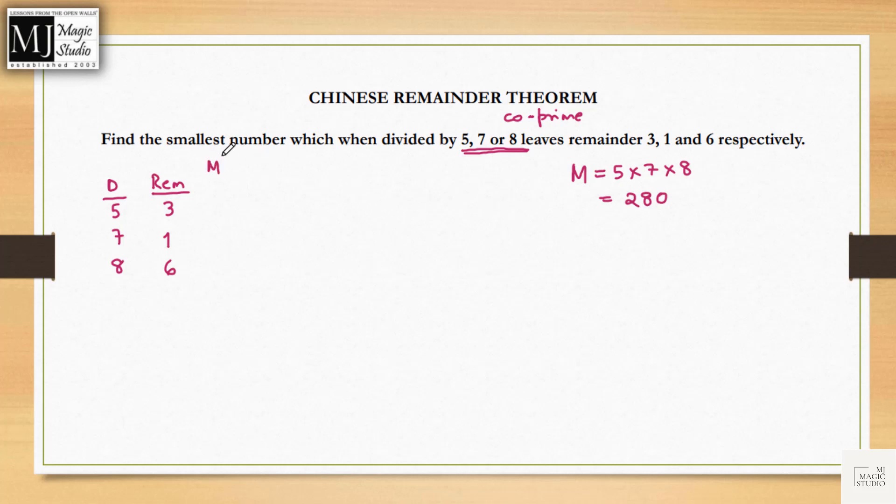Next step is we will find M dash. M dash is M divided by D. So the first one would be 280 by 5, that is 56. For second one, 280 by 7, that is 40. And then 280 by 8, that is 35.